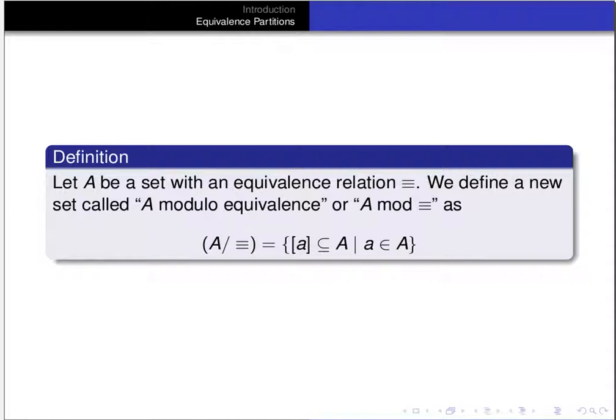A mod equivalence is a set of sets — a set of subsets of the underlying space. It's a partition: all of these sets are disjoint, and the union of all of them is the entire set A. So A mod equivalence is the set of all equivalence classes under the equivalence relation.